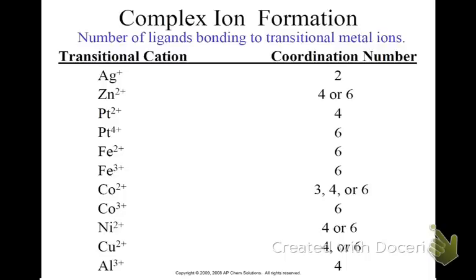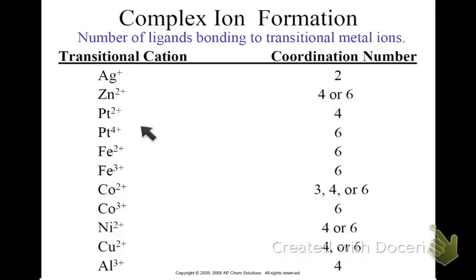Let's talk about coordination numbers. You don't have to memorize these — the rule of thumb is whatever the charge is, double that number, and that tells you the coordination number. Coordination number is how many ligands can attach to a particular transition metal. On question 4 on the AP test, they usually accept a wide range of answers — they're just looking to see that you set up a complex ion. For example, with zinc they'd accept any coordination number between 4 and 6. The rule of thumb: whatever the charge, double it — that's how many you attach.